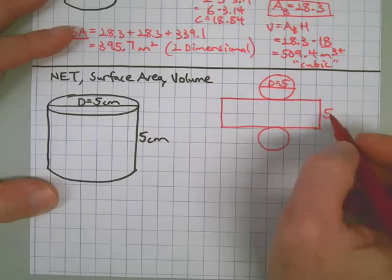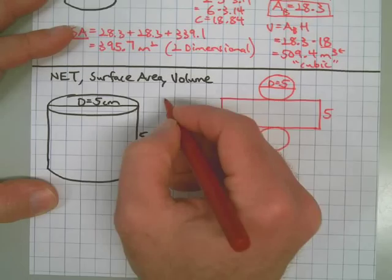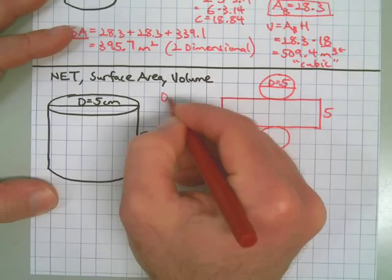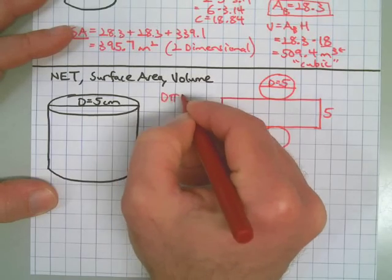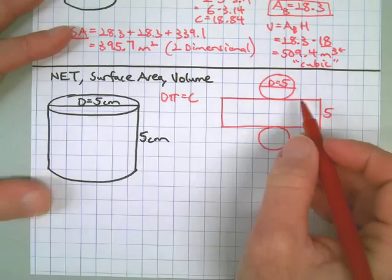This time we have the diameter. Let's go ahead and do diameter times pi to get the circumference. It doesn't matter what order you do this work in.